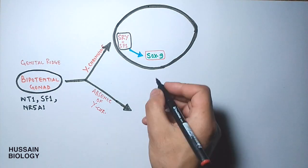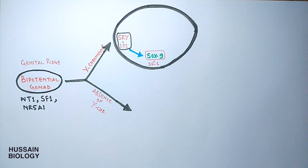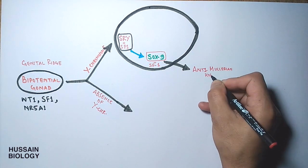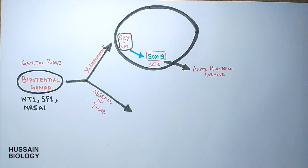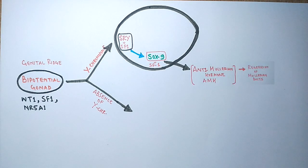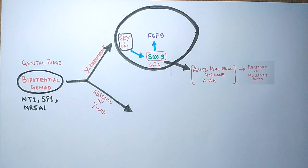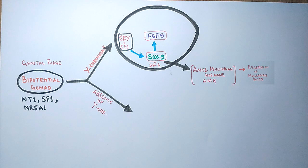When the SRY protein (TDF) forms a complex with SF1 protein, TDF acts as a transcription factor that upregulates SOX9, thereby activating the SOX9 gene. SOX9 then interacts directly with SF1, and together they regulate transcription of the anti-Müllerian hormone (AMH) gene, which encodes anti-Müllerian hormone. This ultimately leads to regression of the Müllerian ducts in the XY condition — since Müllerian ducts are characteristic of females, they are suppressed here. Furthermore, SOX9 activates FGF9, which forms a positive feedback loop with SOX9, ensuring continuous FGF9 production.